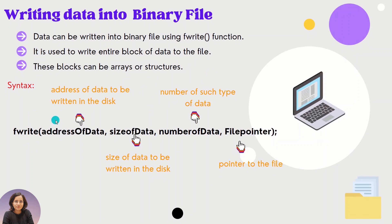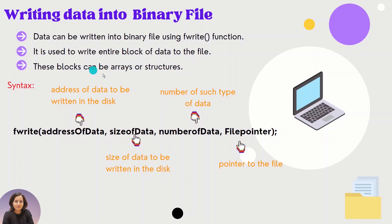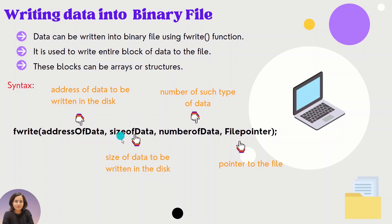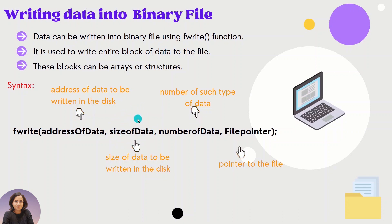To write data to the binary file, we have the fwrite function. It is used to write an entire block of data to the file — generally the block can be arrays or structures. The fwrite function takes four arguments. The first argument is the address of the data, which we get using the ampersand sign. The second argument is the size of the data, for which we use the sizeof function, which gives the number of bytes required for that block of data.